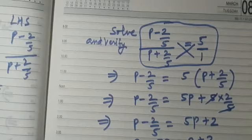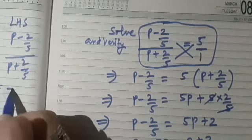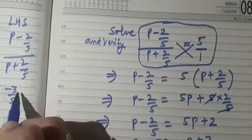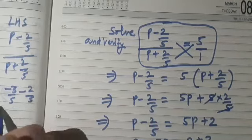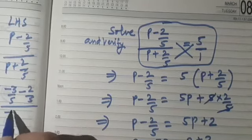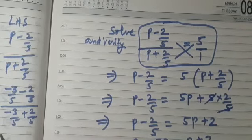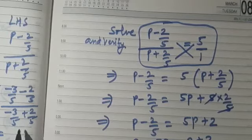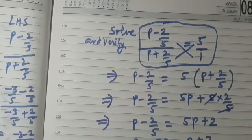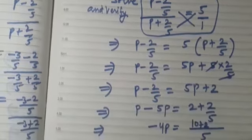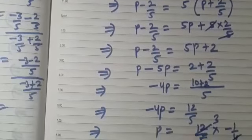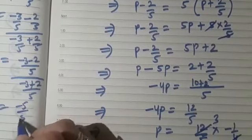In the numerator we have minus 3/5 minus 2/5, and in the denominator we have minus 3/5 plus 2/5. Simplifying, the numerator becomes minus 3 minus 2 upon 5, which is minus 5/5, and the denominator becomes minus 3 plus 2 upon 5, which is minus 1/5.